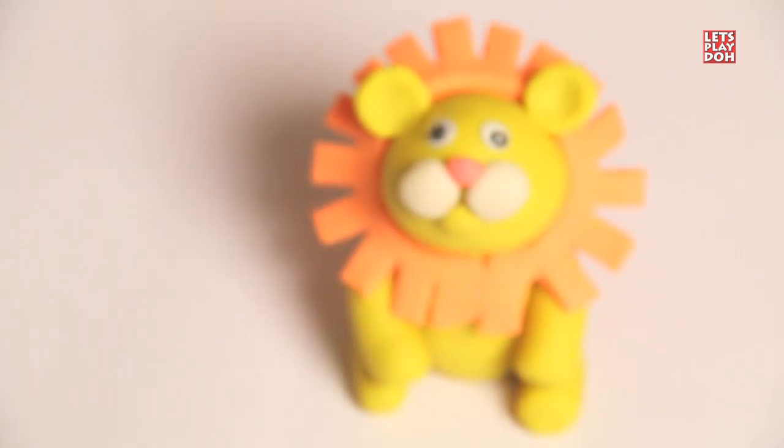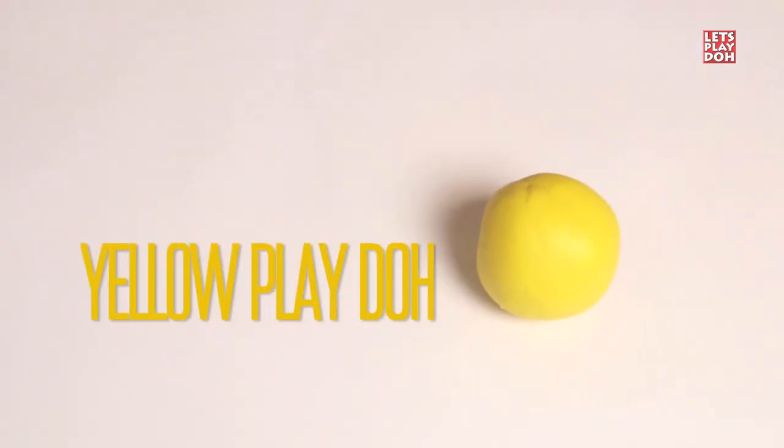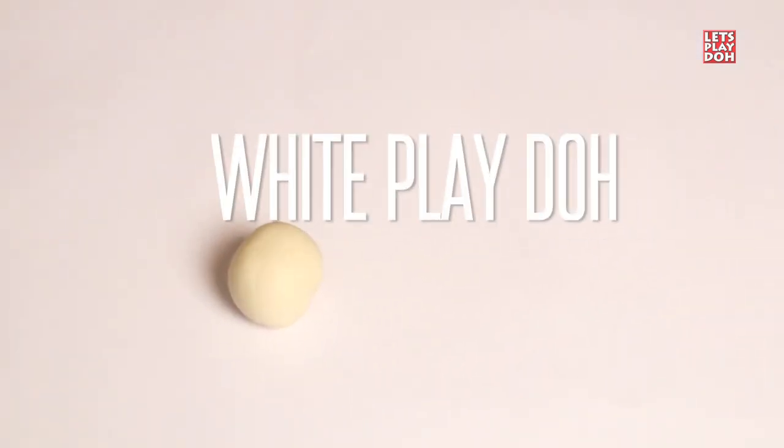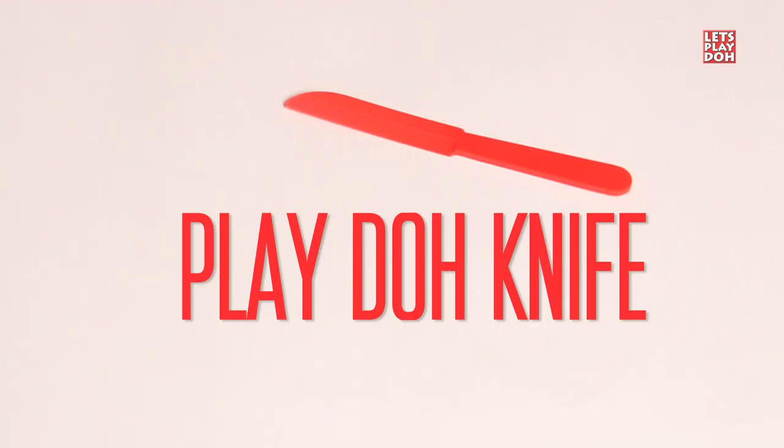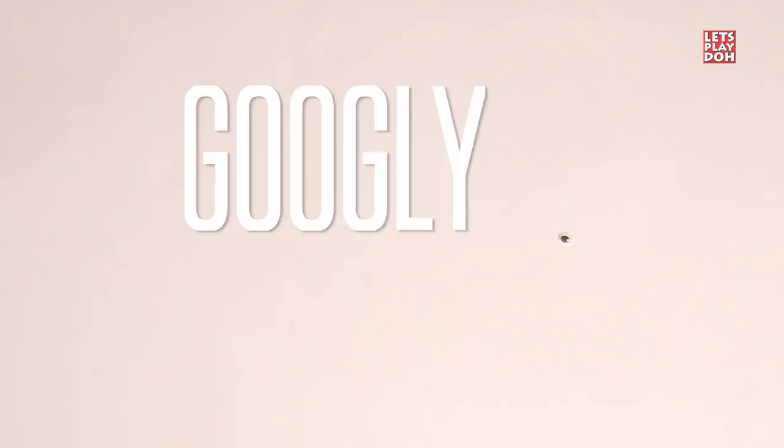It's going to be a lot easier than you think. All we're going to need is some yellow Play-Doh, some white Play-Doh, some pink Play-Doh, and some orange Play-Doh. Those colors, a Play-Doh knife, and some googly eyes, and we are ready to get started. Here we go.